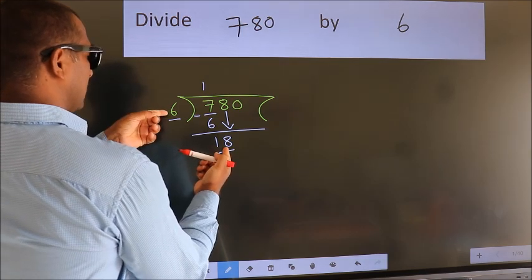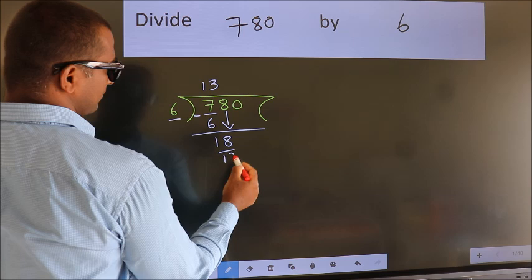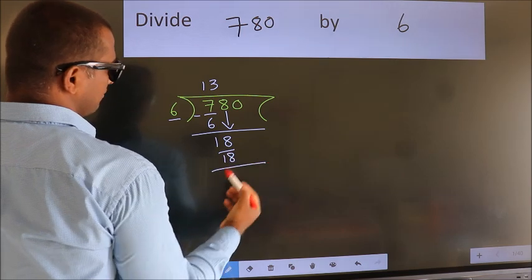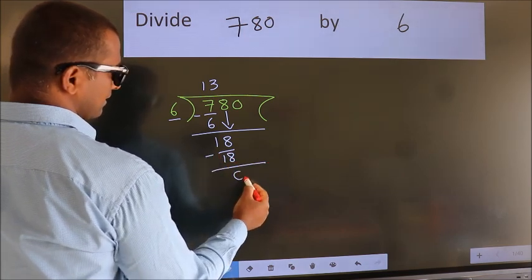In 6 table. 6 times 3 is 18. Now, we subtract. We get 0.